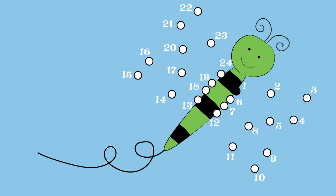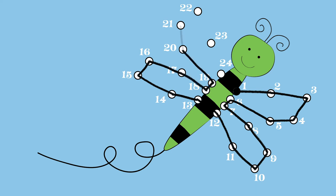One, two, three, four, five, six, seven, eight, nine, ten, eleven, twelve, thirteen, fourteen, fifteen, sixteen, seventeen, eighteen, nineteen, twenty, twenty-one, twenty-two, twenty-three, twenty-four.